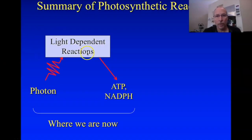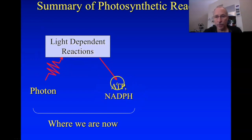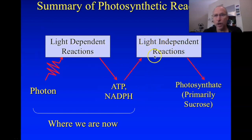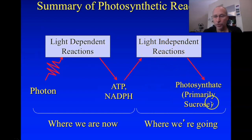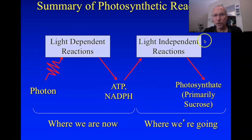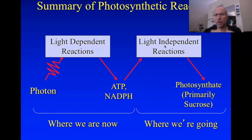So we now have the light-dependent reactions understood: it's how energy from photons is absorbed and transduced onto ATP and NADPH. Now we have to take that energy in the form of ATP and NADPH and use it to drive the light-independent reactions to produce sucrose or whatever the photosynthate happens to be. The light-independent reactions are very much like the Krebs cycle and glycolysis run backwards — not identical, but lots of similar compounds and essentially the same concepts.